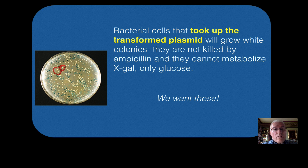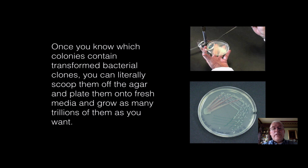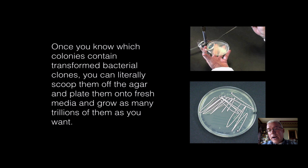The white colonies are the ones that have taken up the plasmid with the gene of interest inserted — what we call a transformed plasmid. So we get our white colonies, take a bacterial loop which you sterilize in a Bunsen burner — basically a metal handle with a little loop of metal on the end — sterilize it, scoop out one of those white colonies, and rub it onto a fresh agar plate, then incubate it. What you should now get is lots and lots of colonies of just the white bacteria. You can repeat this process and grow as many trillions of these as you want.